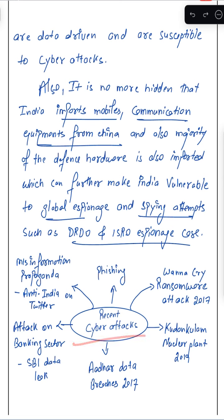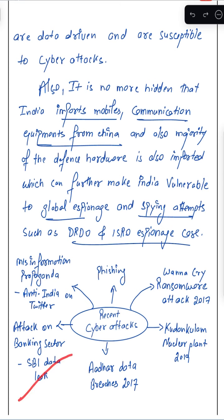What are the recent cyber attacks in India? There are ransomware attacks, nuclear power plant attacks, data breaches, banking sector data leaks. Additionally, misinformation and propaganda are used online — for example, anti-India stances and movements on Twitter, or misguiding people through social media in Kashmir. So misinformation and propaganda is a major component of cyber warfare.